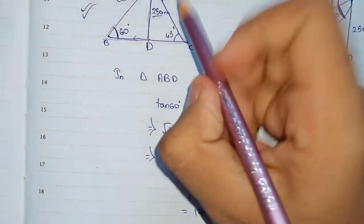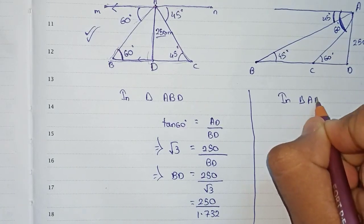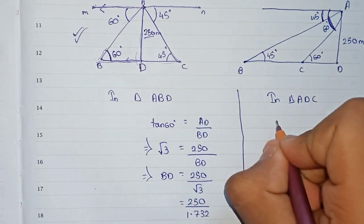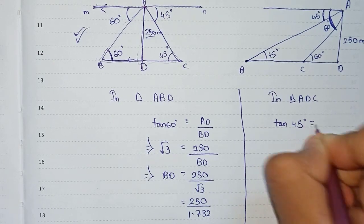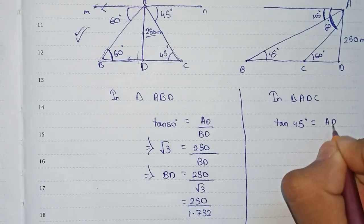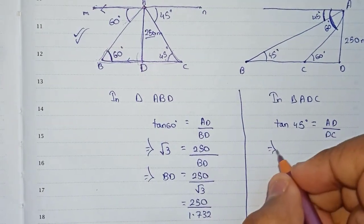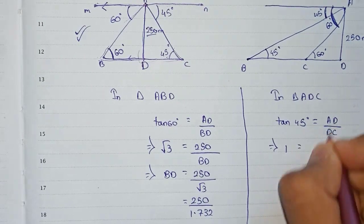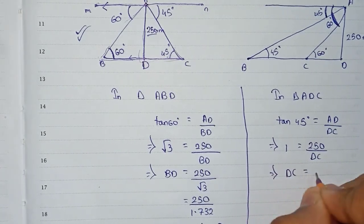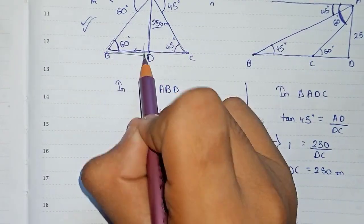Now we take triangle ADC. In triangle ADC, tan 45 equals height over base, which is AD over DC. Since tan 45 equals 1, and AD is 250, we get 1 equals 250 over DC. So DC equals 250 meters.